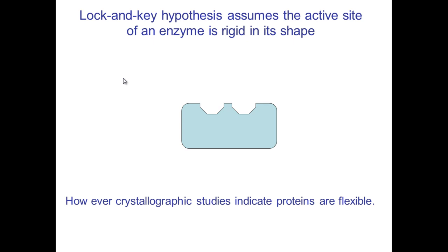The lock and key hypothesis assumes that the active site of the enzyme is rigid in shape. If this is our enzyme, then this section where the substrate will bind is called the active site and it is the bit where all enzymes bind their substrates.